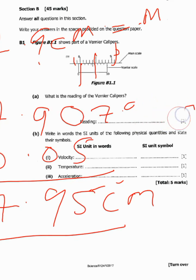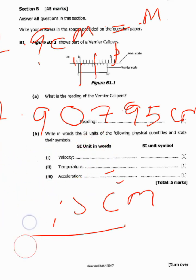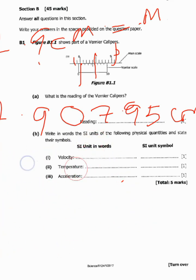So the final answer is 7.95 centimeters. That is how we find the answer and get the readings from the Vernier calipers.